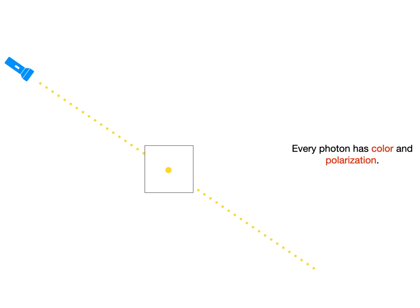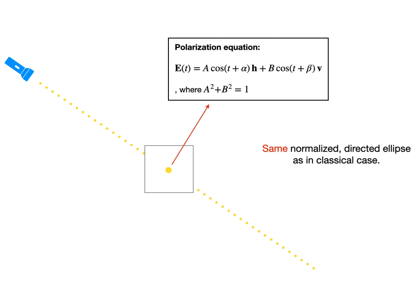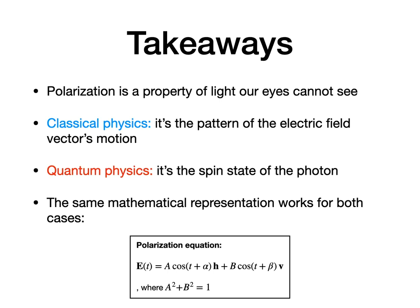Thus, in quantum physics, the interpretation of color and polarization is different from that of classical physics. Nevertheless, mathematically we can still represent the polarization of the photon with the very same normalized, directed ellipse as before. The reason why it works is because there is a one-to-one correspondence between the possible polarizations of the classical light ray and the possible spin states of its underlying identical photons.